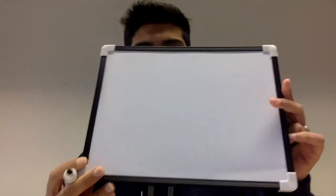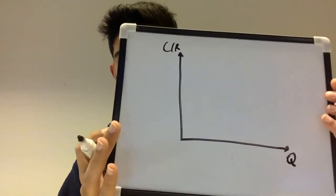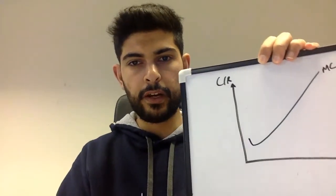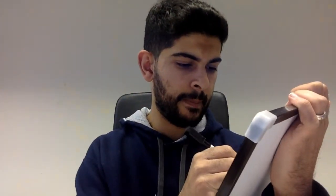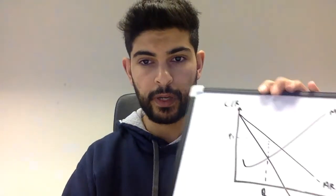On the cost and revenue diagram: the y-axis is cost/revenue and the x-axis is quantity. Draw the MC curve first as a tick shape, then draw MR and AR as downward-sloping curves, where AR equals demand and MR is below it with half the gradient. Profit maximisation is where MC equals MR — drop down to get initial quantity Q1, then read up to the AR curve to get price P1.